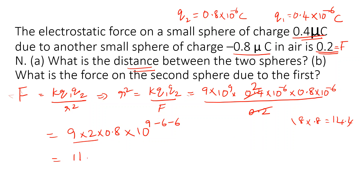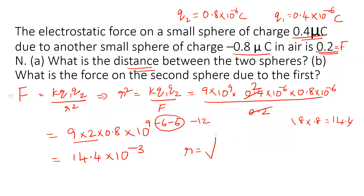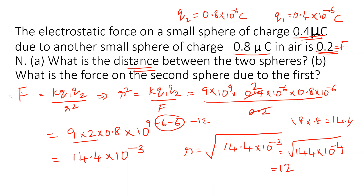We compute: 14.4 × 10⁹⁻⁶⁻⁶ = 14.4 × 10⁻³. Dividing by F = 0.2, we take the square root of 14.4 × 10⁻³. Rewriting as 144 × 10⁻⁴, the square root is 12 × 10⁻² meters, which equals 12 centimeters. So R = 12 cm.